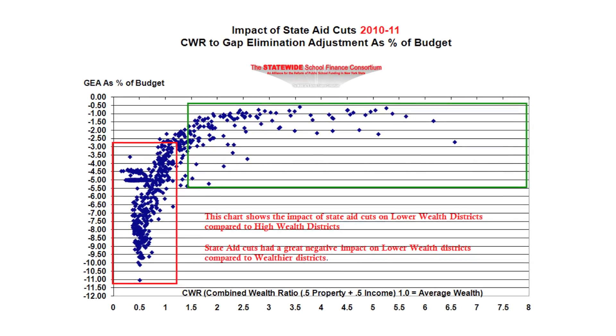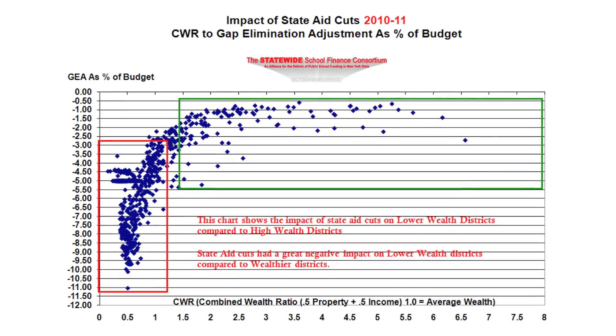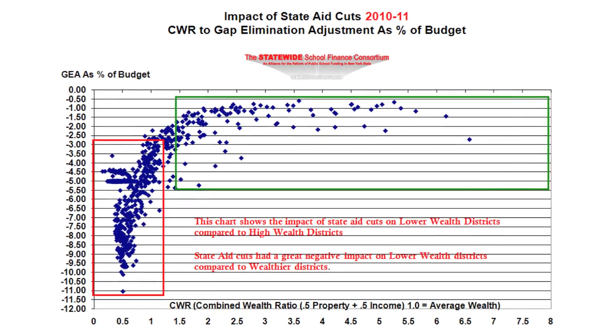Schools weren't the only ones — municipalities also had cuts, but we had pretty severe cuts. Let me explain the CWR part. The combined wealth ratio has two major factors in determining how wealthy a school district actually is. They compare its income wealth to the income wealth of an average school district in the state of New York. When you fill out your income tax form, there's a box that says what's your school district code — that way they can add up all the salaries and income of all people living in the school district across the state, and compare total income to the average.